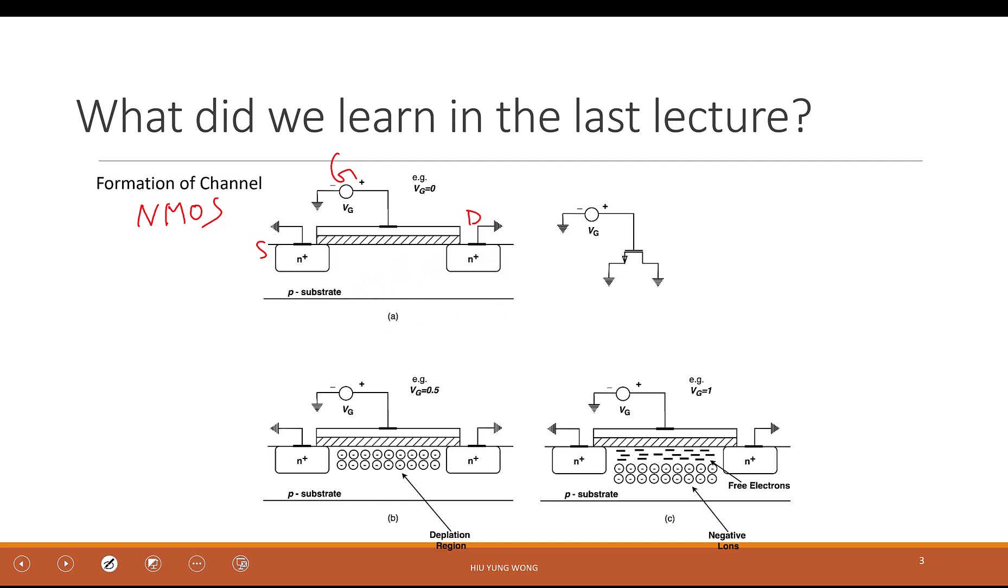When your gate voltage is low, or a more technical term is that when it is smaller than the threshold voltage, then you actually form a P-N back-to-back P-N diode.